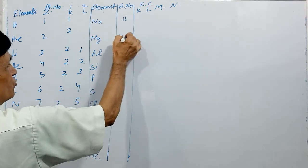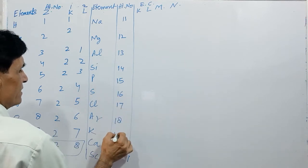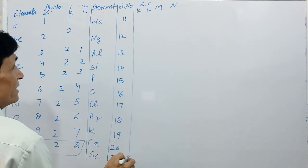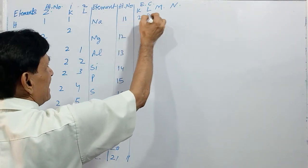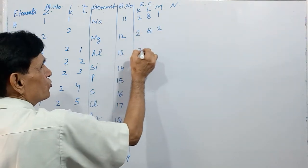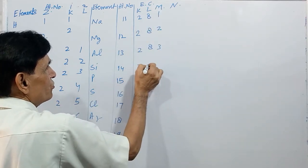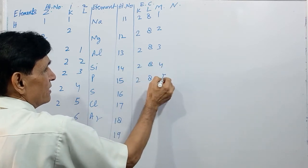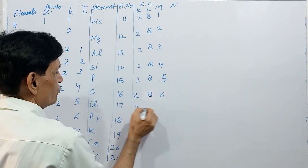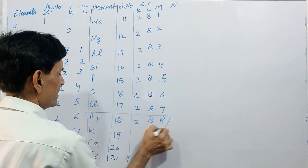Electronic configurations: Sodium (11): 2, 8, 1. Magnesium (12): 2, 8, 2. Aluminum (13): 2, 8, 3. Silicon (14): 2, 8, 4. Phosphorus (15): 2, 8, 5. Sulfur (16): 2, 8, 6. Chlorine (17): 2, 8, 7. Argon (18): 2, 8, 8 — it can have 8 because it is chemically stable. This is argon.